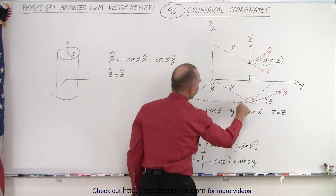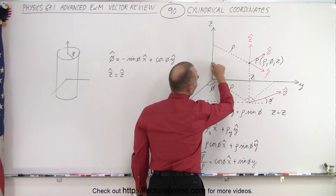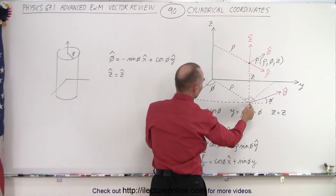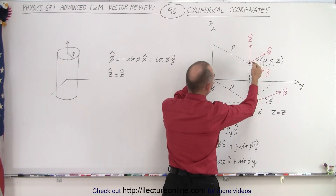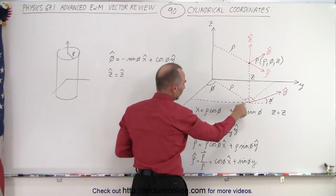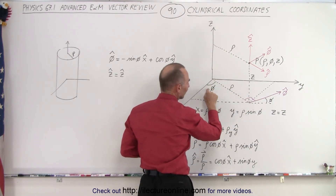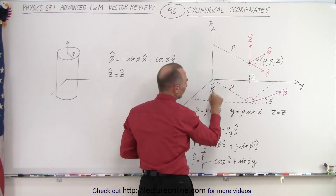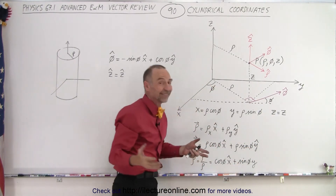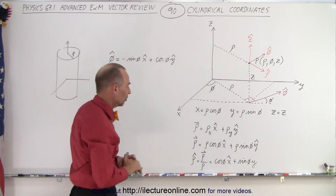If we now want the Y value of that point, that distance would be projected. This distance Y is equal to rho times the sine of phi because it's the side opposite to the angle. And finally, Z equals Z, because that's the same in cylindrical coordinates as it is in Cartesian coordinates.